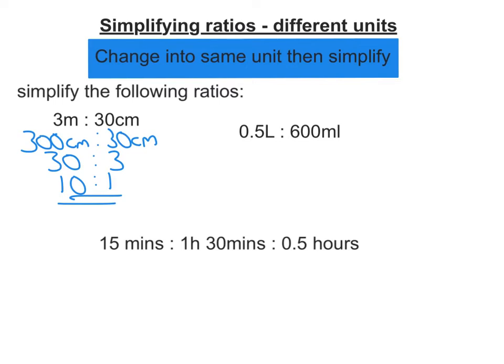Second here, we've got 0.5 liters to 600 milliliters. Well, remember there's 1,000 milliliters in a liter. So 0.5, a half a liter, would be 500 milliliters to 600 milliliters. Both of these can be divided by 100, so I'm left with 5 to 6. That's the ratio.